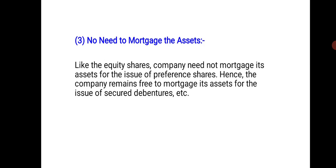Just as you don't need to mortgage any assets to issue equity shares, similarly for preference shares you also do not need to do so. The company's assets remain free and can be mortgaged for any other source of financing. Hence, the company remains free to mortgage its assets for the issue of secured debentures.